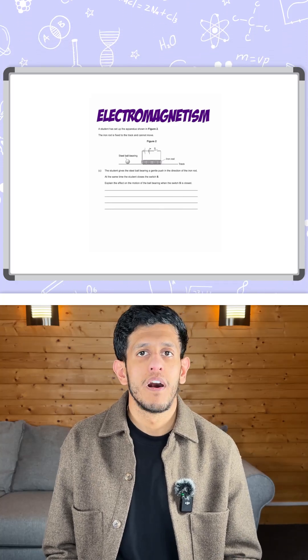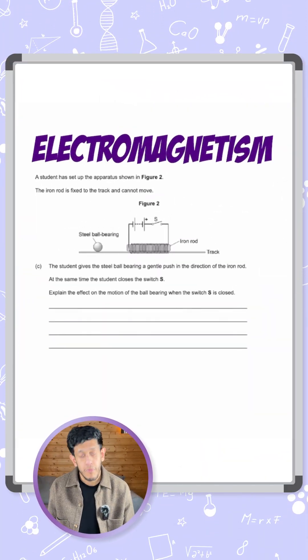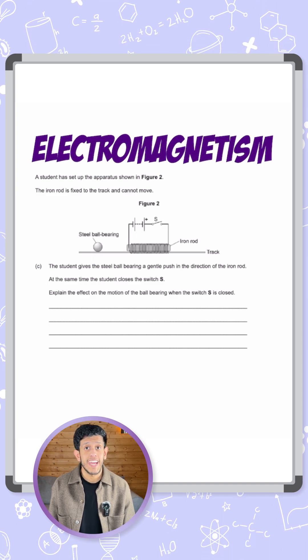So here we have a question on electromagnetism for four marks. Let's take a look at it. A student has set up the apparatus as shown in Figure 2. The iron rod is fixed to the track and cannot move.